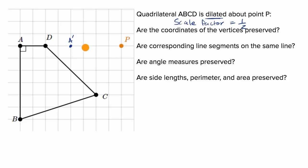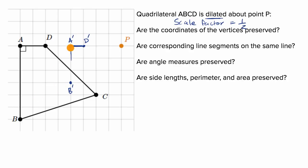Point D is six away, so D prime would be three away — half as far. And so this would be segment A prime D prime, which corresponds to segment AD. Point B, with a scale factor of one half, is six below A, so it's going to be three below A. This would be B prime. If you connect a line from point P to B, B prime is also on that line — just half as far, scale factor of one half.